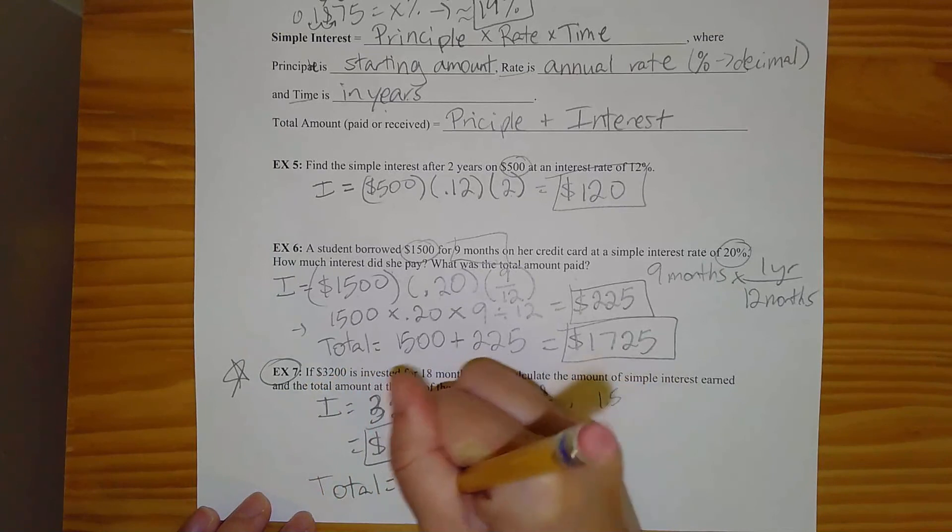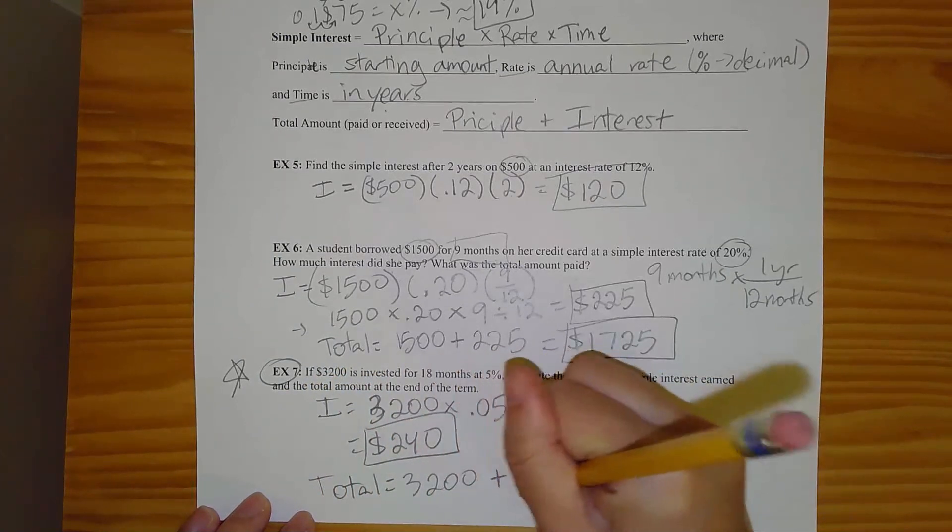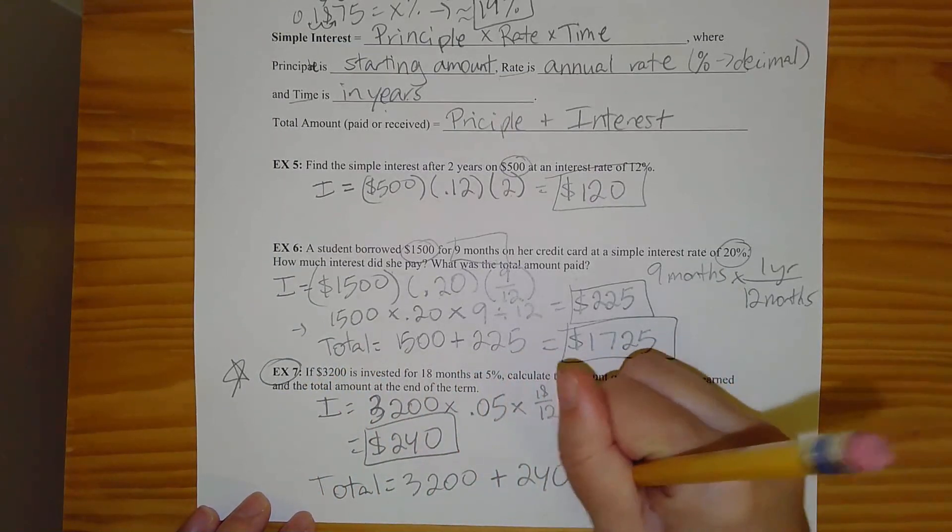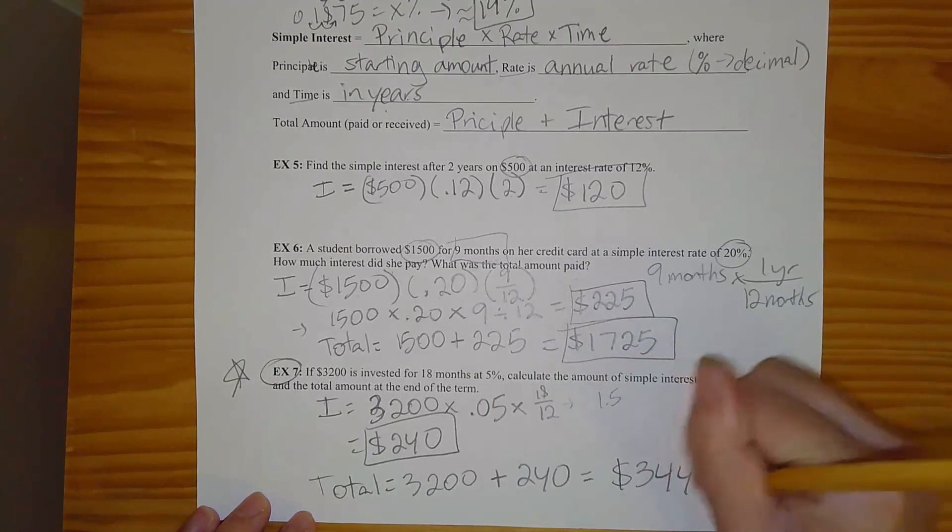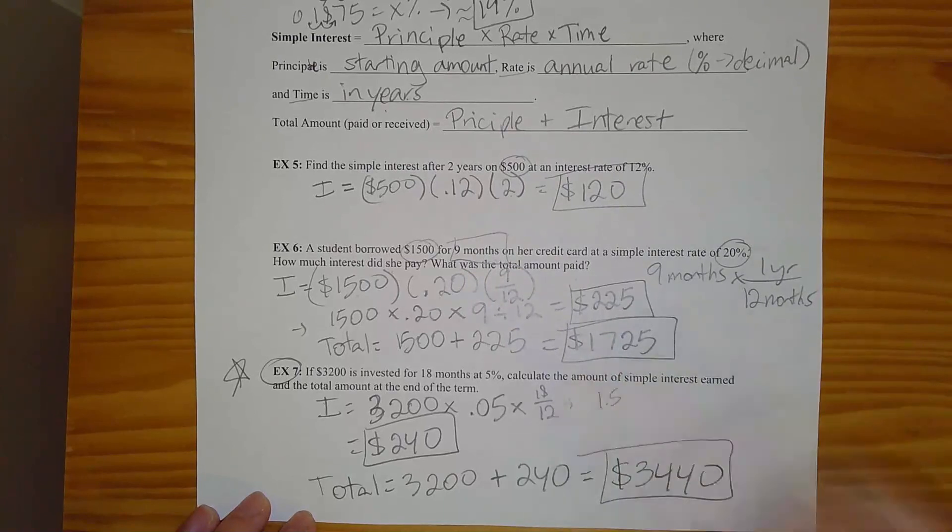The total amount, you should be adding things together. So 3,200, adding the $240 of interest, and then the total amount then would be $3,440.